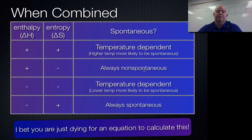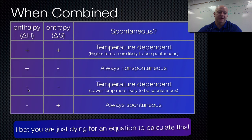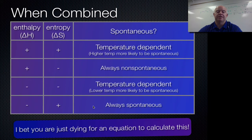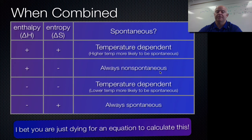Positive ΔH pushes toward non-spontaneous; negative ΔH pushes toward spontaneous. Entropy is the opposite: positive ΔS is good for spontaneity, negative ΔS is bad. The best combination for a spontaneous reaction is negative ΔH and positive ΔS — always spontaneous. For always non-spontaneous, you want positive ΔH and negative ΔS. When you get a plus/plus or minus/minus combination, that's where it gets more complicated.